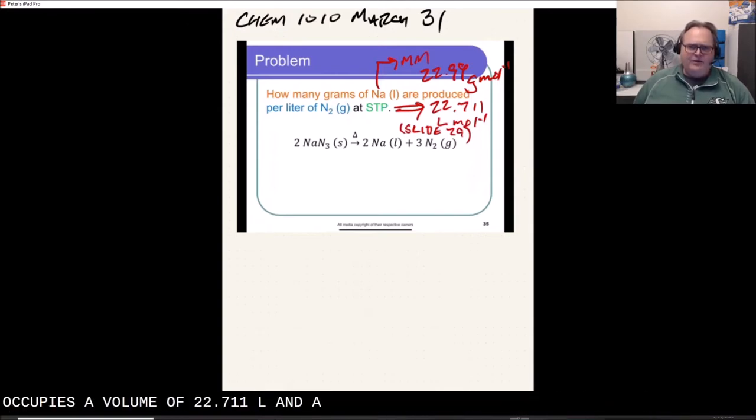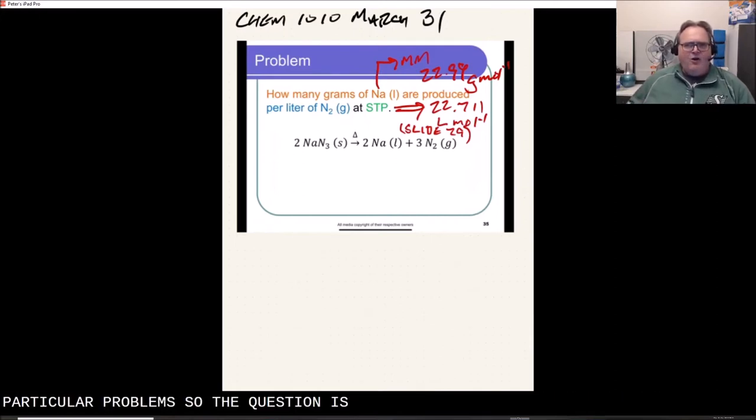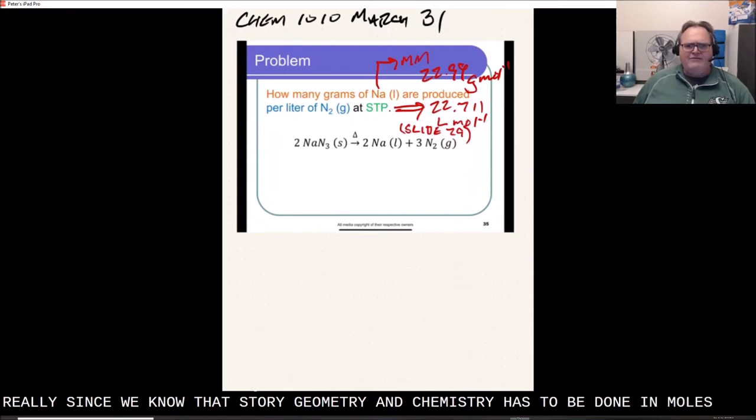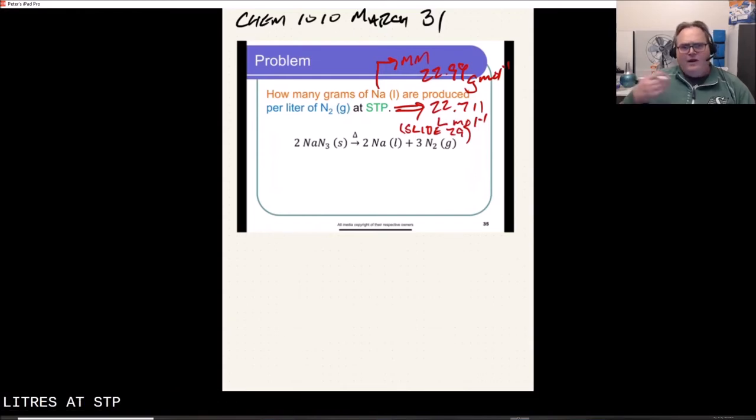And I've also got written on this slide here the molar mass of sodium, 22.99 grams per mole, because that's going to be important for solving this particular problem. So if the question is saying are produced per liter of N2, then really since we know that stoichiometry and chemistry has to be done in moles, we're going to have to take that idea that if one mole occupies a volume of 22.711 liters at STP, well, one liter has how many moles in it?